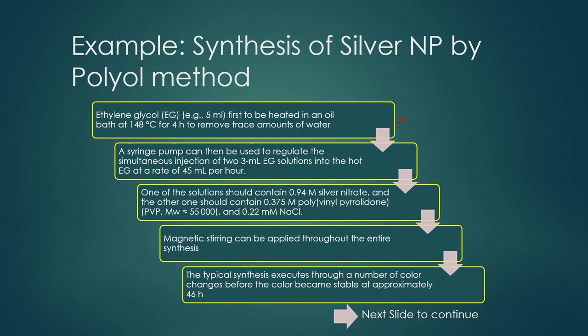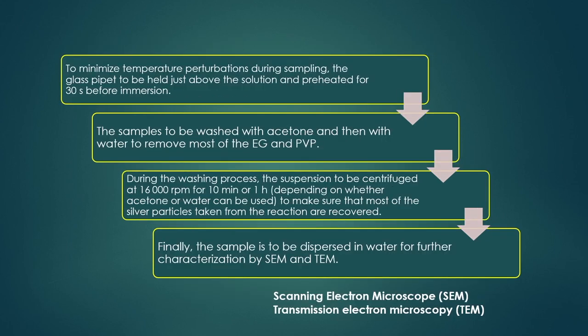One of the solutions should contain 0.94 molar silver nitrate, and the other should contain 0.375 molar polyvinyl pyrrolidone along with 0.22 millimolar sodium chloride. The solutions are stirred by magnetic stirrer throughout the entire synthesis. The typical synthesis goes through a number of color changes, and when the color becomes stable at approximately 46 hours, you can assess whether the nanoparticle synthesis is proceeding properly. If not, the proportion or concentration of solvent must be adjusted.